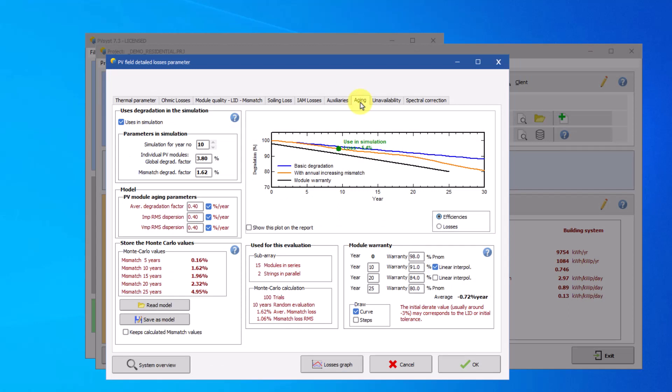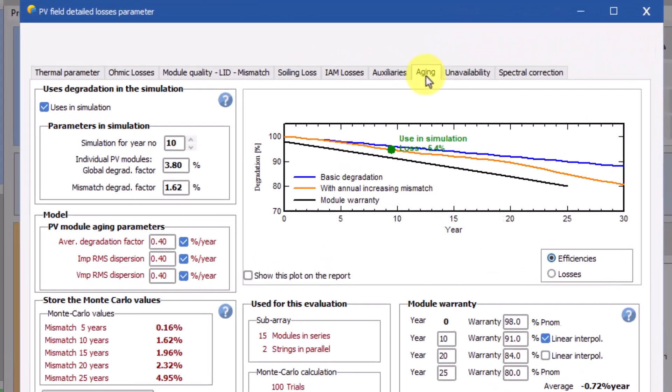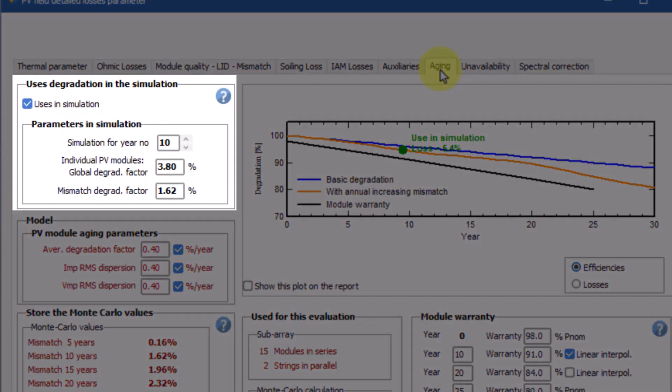In this window, activate the option Uses in simulation if it's not yet done. In a PV system, the main parts subjected to aging are the PV modules themselves and the increasing mismatch between modules.